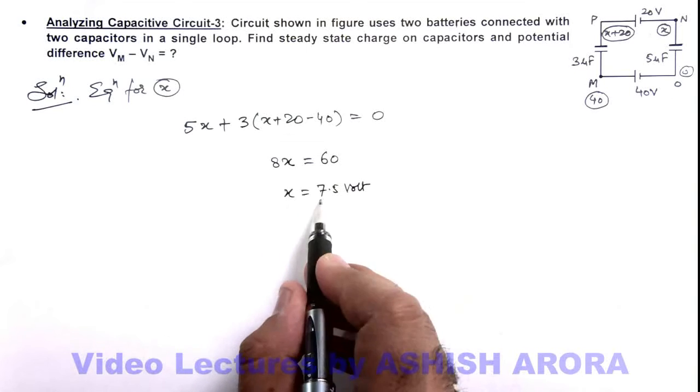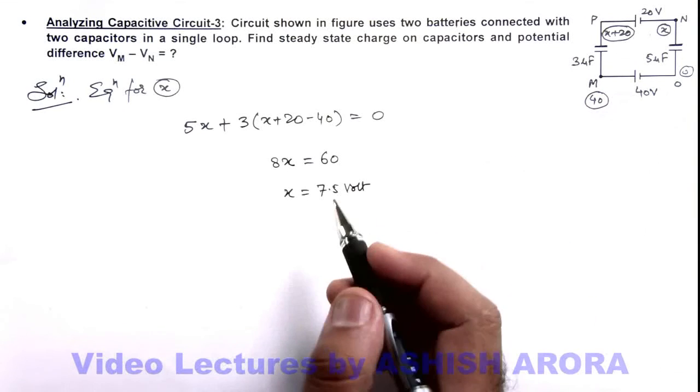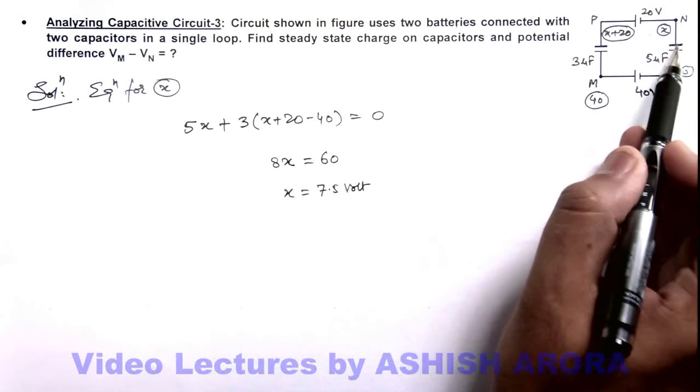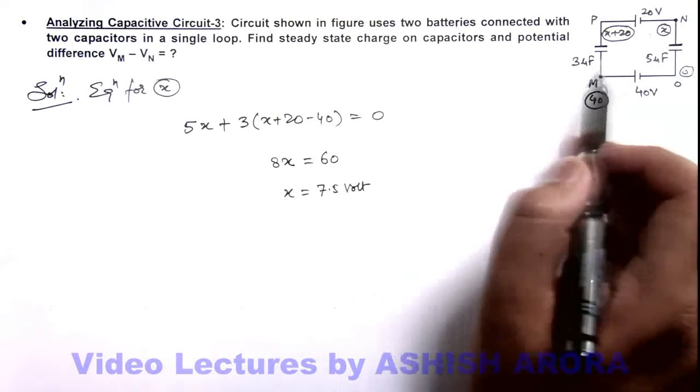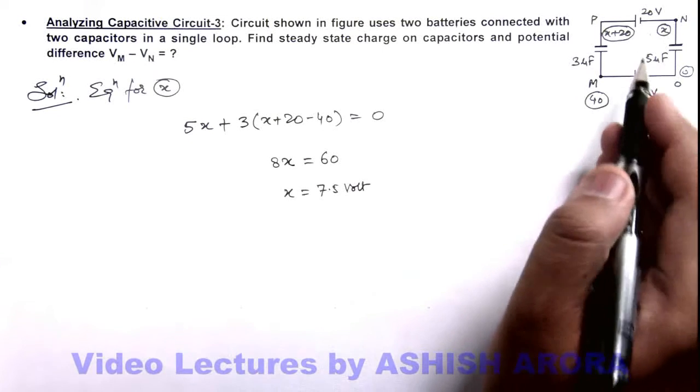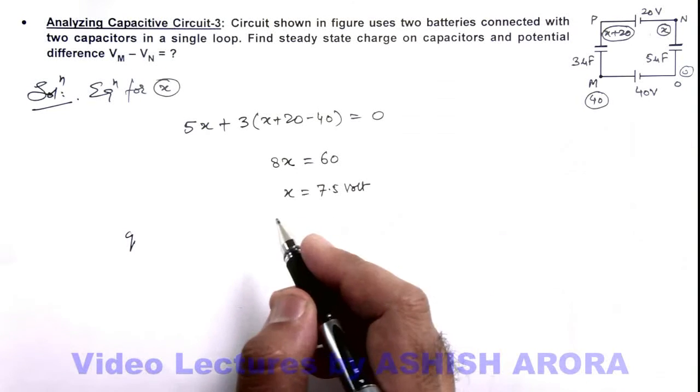If we got the value of x, we can get the charges on both of these capacitors. As they are connected to one another by one wire through battery, the charges on the two capacitors must be equal, as these can also be considered in series.